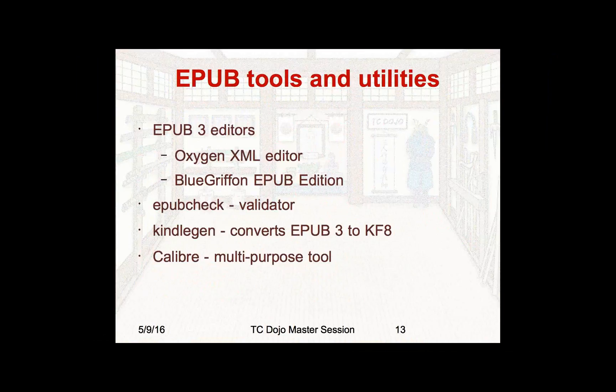There are a number of tools you'll need. Some sort of editor because you're going to have to do some tweaking — Oxygen is the one I prefer. There is one called Blue Griffin that is designed specifically for EPUBs — it works well, it's a little cheaper than Oxygen, but has some features but not all of them. Unless you're using an editor that has a validator, you'll need the EPUB check utility to do your validation. If you're trying to create Kindle output, you'll want to use the Kindle Gen utility from Amazon. And there's a tool called Calibre, which is kind of a Swiss Army knife of EPUB tools — it does all kinds of conversions and has cataloging features. I wouldn't use it for production, but it's nice for prototyping and playing around.